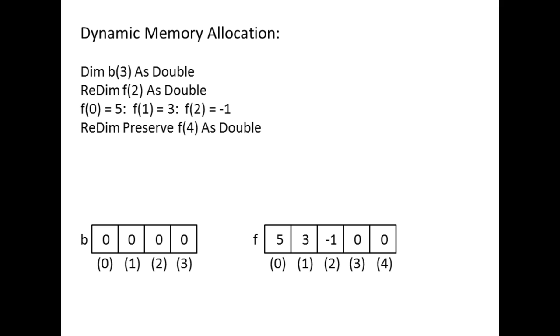If preserve were omitted, all five elements in f would be set to the value 0. We can assign data to the new elements in the usual manner.